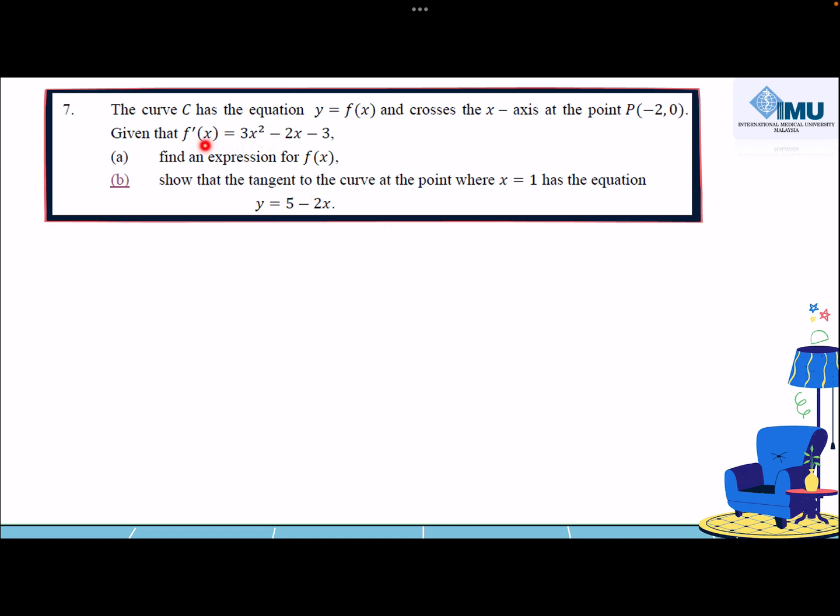Given that f'(x) is equivalent to 3x² - 2x - 3, show that the tangent to the curve at the point where x = 1 has the equation y = 5 - 2x.